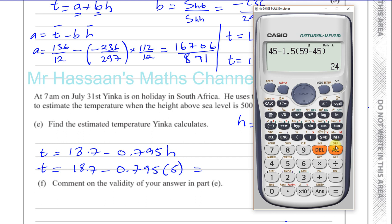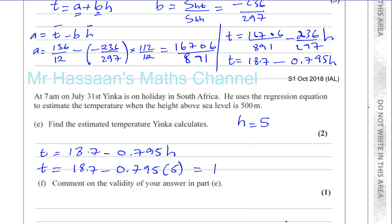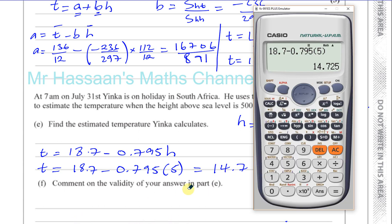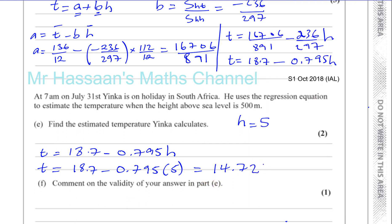So we have 18.7 minus 0.795 times 5, which gives us the answer, which is 14.7. Let's write it to a higher degree of accuracy first and then round it. It's 14.725 according to these numbers here, which is 14.7 to 3SF, degrees Celsius. So that's the answer for that part.